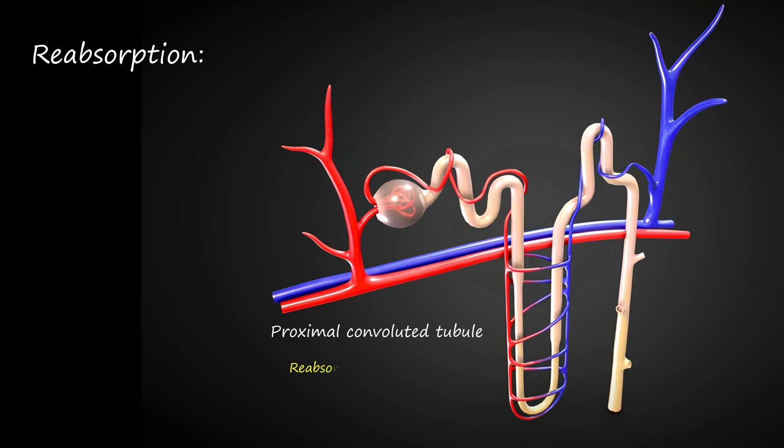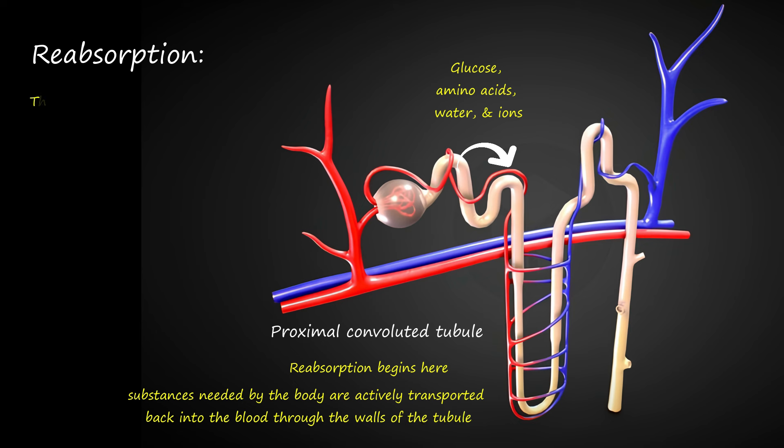Reabsorption begins primarily in the proximal convoluted tubule, where substances needed by the body, such as glucose, amino acids, water, and ions, are actively transported back into the blood through the walls of the tubule. This process maintains the body's homeostasis by reabsorbing essential substances and regulating electrolyte balance.